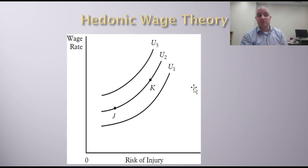Keep in mind that indifference curves mean that at any point along that curve you are equally as happy. At point J, you have some wage rate and some risk of injury. At point K, your risk of injury is higher. In order for you to be just as happy as point J with higher injury risk, you would need to be paid more money to be equally as happy. That's why we have the upward sloping.